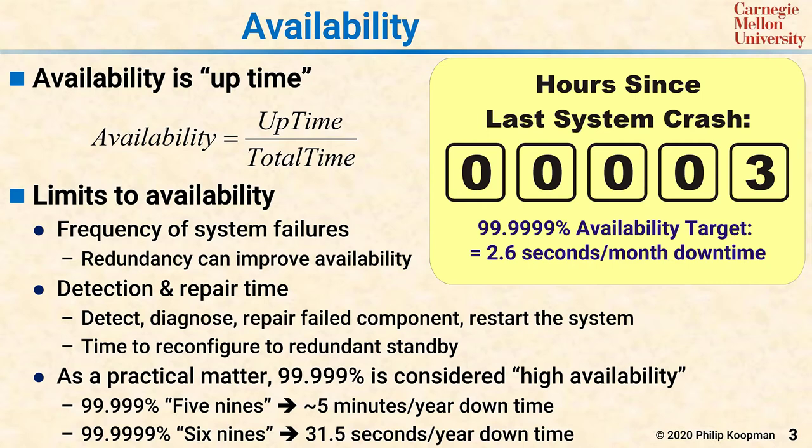Some systems, such as telecommunications switches, shoot for six nines of reliability, which is 31.5 seconds of downtime per year — only about two and a half seconds of downtime a month. With that kind of downtime budget, even an occasional maintenance reboot will cause you to fall short of the availability target. To get high availability, you need to make sure your system is never brought down except for a catastrophic component failure. That's why high availability enterprise systems emphasize on-the-fly software updates without reboot, redundant power supplies, and hot swap of components, so you can perform maintenance without ever taking the system down.